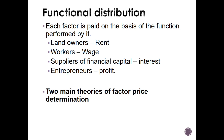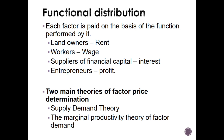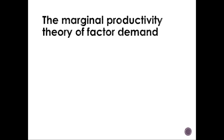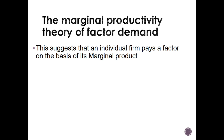There are two main theories of factor price determination: the supply-demand theory and the marginal productivity theory of factor demand. The supply-demand theory states that when wages increase, labor supply also increases — if people are getting paid a lot, workers will seek employment because they know they are going to earn more. The marginal productivity theory suggests that an individual firm pays a factor on the basis of its marginal product, where marginal revenue equals marginal cost.